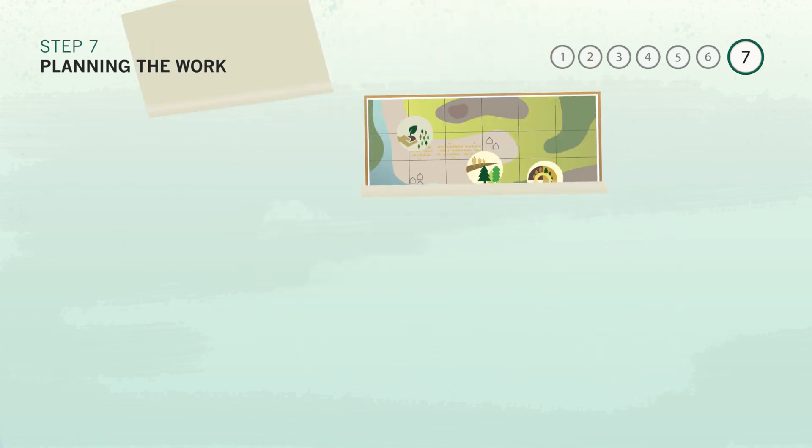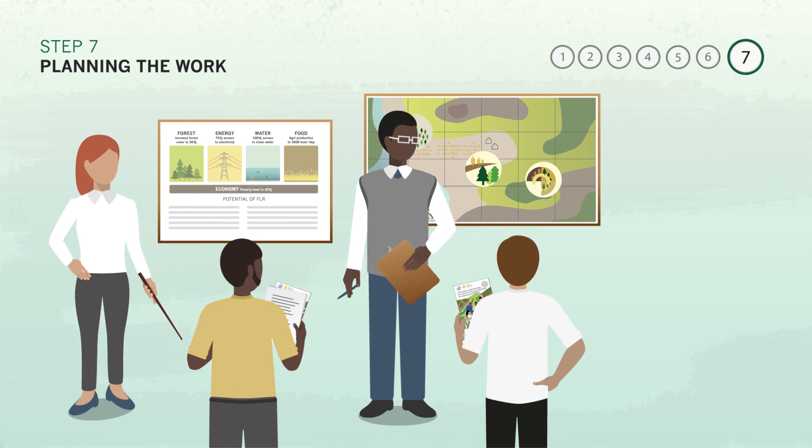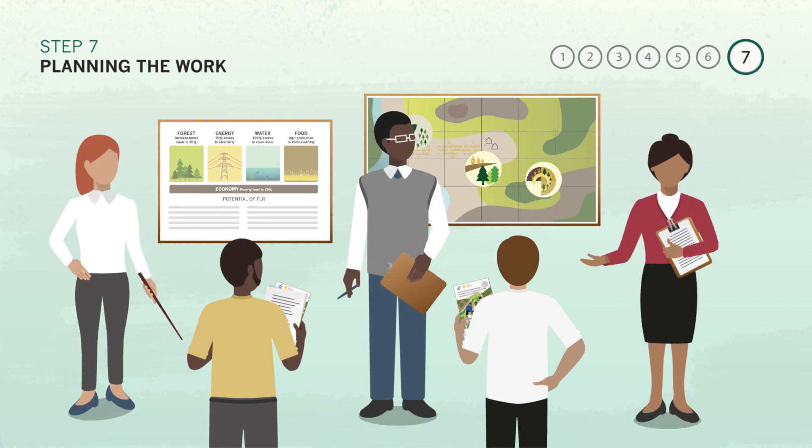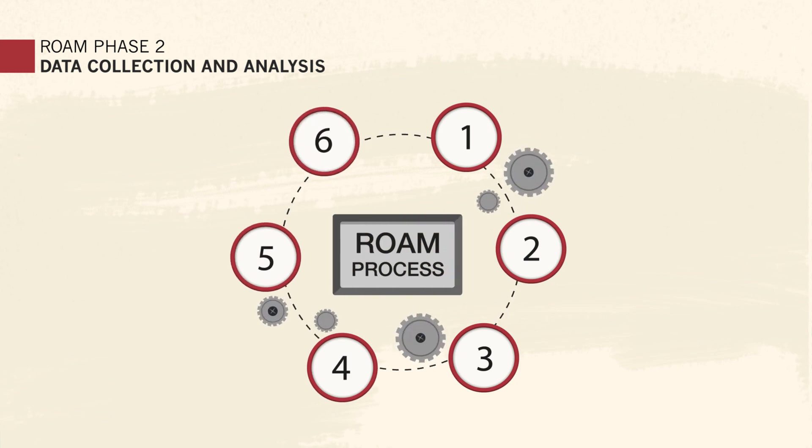The first stage of ROAM ends with an inception workshop to inform stakeholders of the team's early findings and plans, and to formally launch the assessment. This workshop, like the rest of ROAM, will be stakeholder-driven to ensure that outputs from the work will be valid, influential, and productive later on. This is also a good opportunity to explore how these outputs can be incorporated into domestic activities and national plans down the road. With this planning and preparation work complete, the assessment team is ready for stage 2: data collection and analysis.